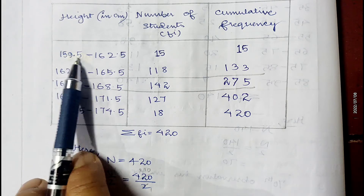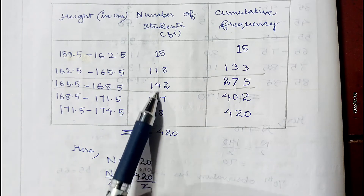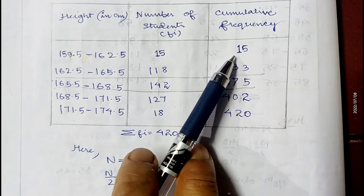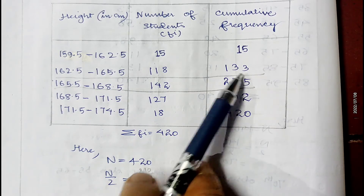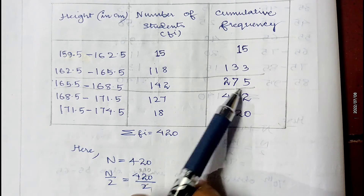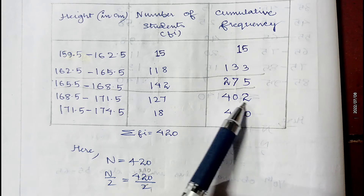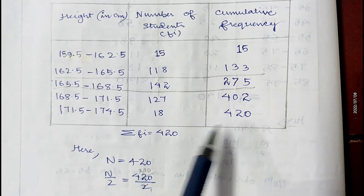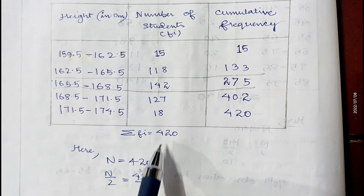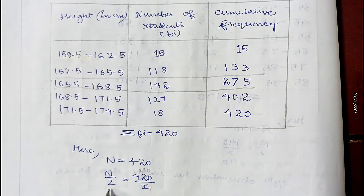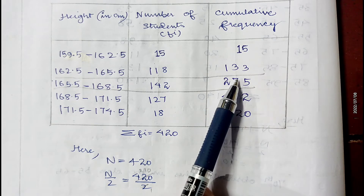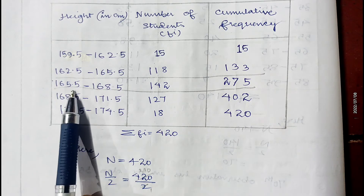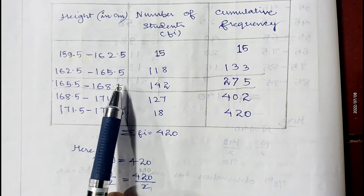After applying the conversion factor, we get continuous class intervals. The corresponding frequencies remain the same. Cumulative frequencies are: 15, 133, 275, 402, and 420. So summation fi is 420, meaning n is 420 and n/2 is 210. The cumulative frequency just greater than 210 is 275, which corresponds to the class 165.5 to 168.5, so this is the median class.